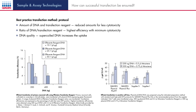Reduced amounts of transfection reagent, as well as smaller amounts of DNA, can have a positive effect. The ratio between plasmid DNA and transfection reagent has to be evaluated. In addition to endotoxin levels, the amount of supercoiled DNA can also facilitate DNA uptake.